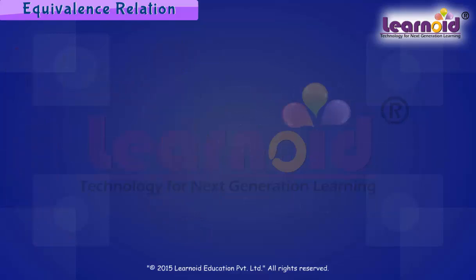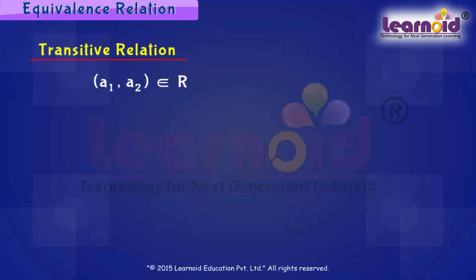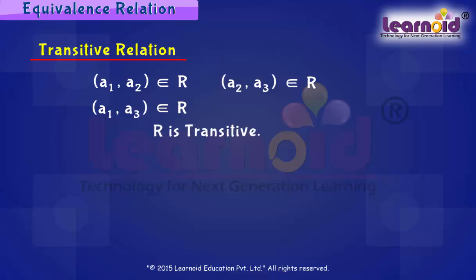Another important relation is transitive. If (A1, A2) belongs to R and (A2, A3) belongs to R, then this implies (A1, A3) belongs to R, for all A1, A2, A3 belonging to set A. Then R is called a transitive relation.